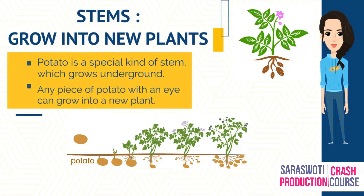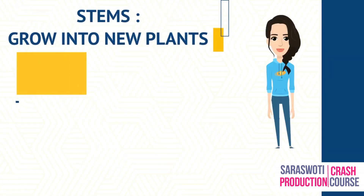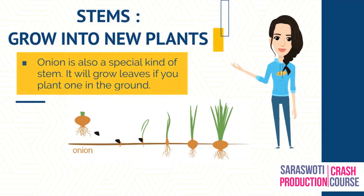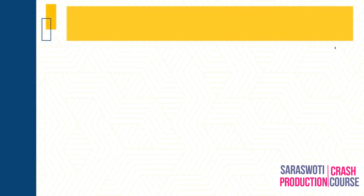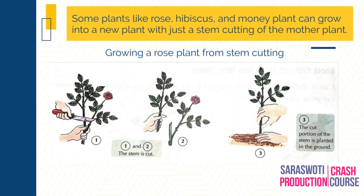Stems that can grow into new plants: potato is a special kind of stem which grows underground. It has buds called eyes on its surface. Any piece of a potato with an eye can grow into a new plant. Onion is also a special kind of stem — it will grow leaves if you plant one in the ground.